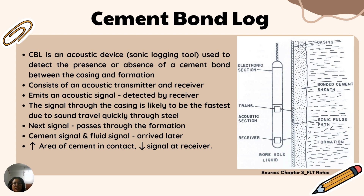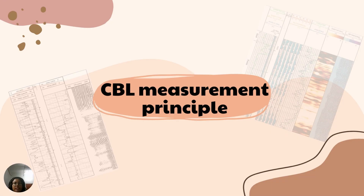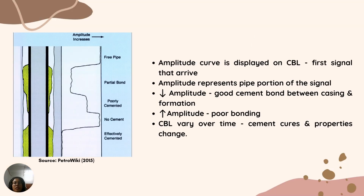The receiver then receives and measures the amplitude and transit time of the returning signals. Based on the received signals, the CBL provides information about the acoustic properties of the well components. Cement contacting the casing tends to dissipate the signal energy as it travels through the pipe. For the CBL measurement principle, the amplitude curve displayed on the cement bond log shows the amplitude of the first signal to arrive at the near receiver, representing the pipe portion of the signal. Low amplitude indicates good casing-to-cement bonding, whereas high amplitude indicates poor bonding.